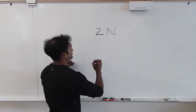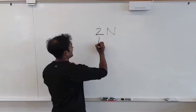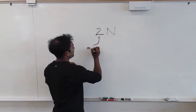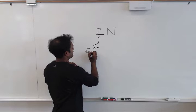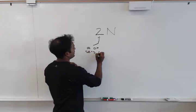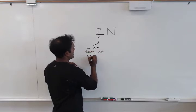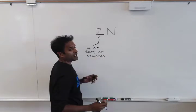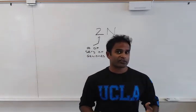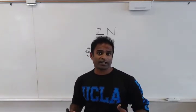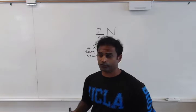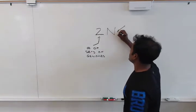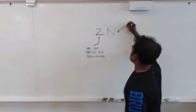The 2 describes the number of sets of genomes we have, and the N describes another number. The N describes how many chromosomes we have per genome. For example, our N number is 23.